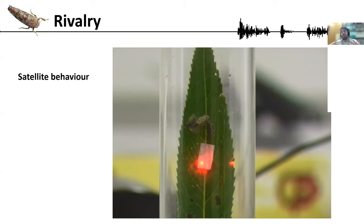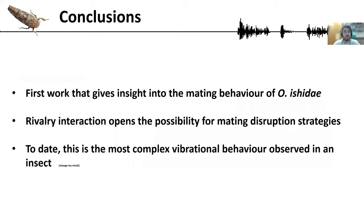The possibility that rivalry disruption is real opens the door to possible control of these pests by basically masking the female answers. If the animals cannot find the female, the reproductive success will drop. This was the first work that gives some insight into the mating behavior of Orientus Ishidae. Rival male interaction opens the possibility for mating disruption strategies. And to date, this is the most complex vibrational behavior observed in an insect.